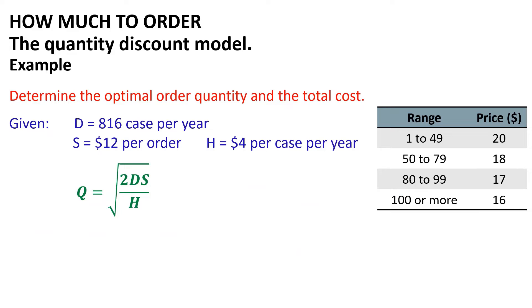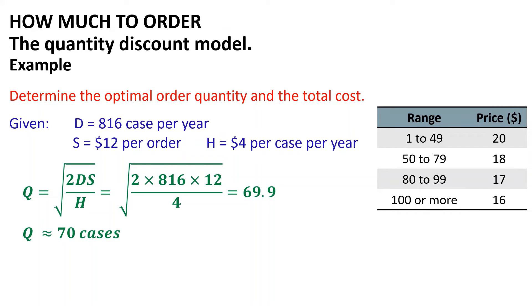The first step is to find the common minimum Q, which equals the square root of 2 multiplied by D multiplied by S divided by H. Substituting the given values: Q equals the square root of 2 multiplied by 816 multiplied by 12 divided by 4, which equals 69.97, approximately 70 cases. The next step is to calculate the total cost corresponding to Q = 70. At this quantity the unit price is $18 per case, as 70 falls in the range of 50–79 cases.